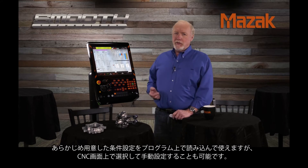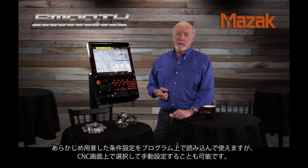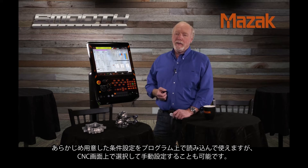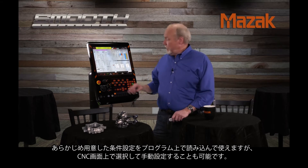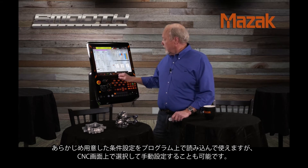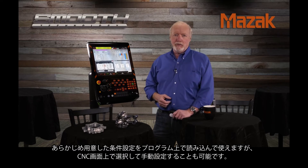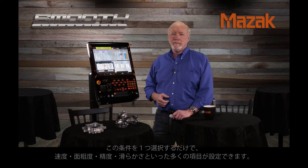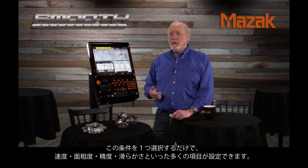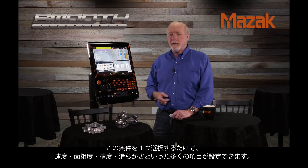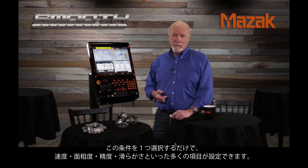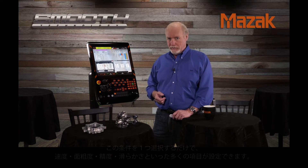SMC can and should be called within a program; however, presets can also be chosen manually on the SMC data select screen. These presets tailor the machine to one of many configurations including speed, roughing, accuracy, or smoothness.